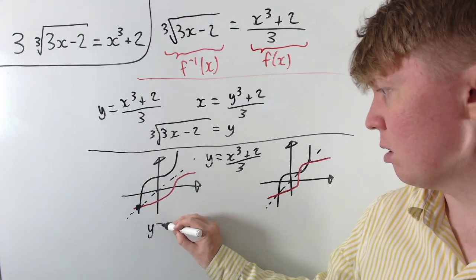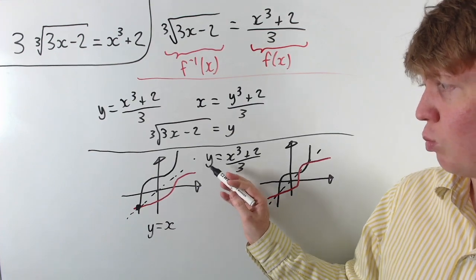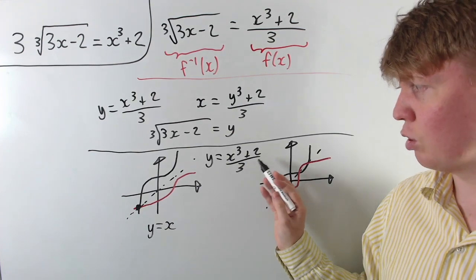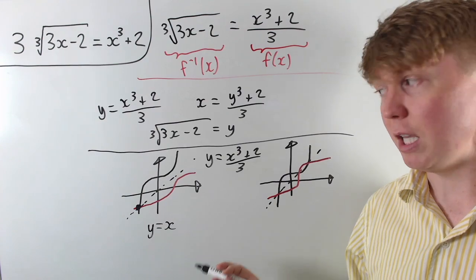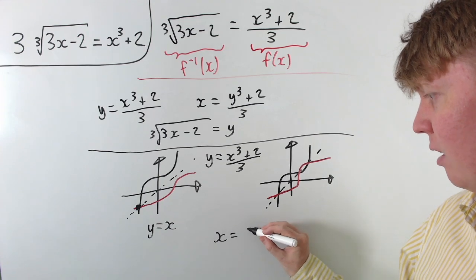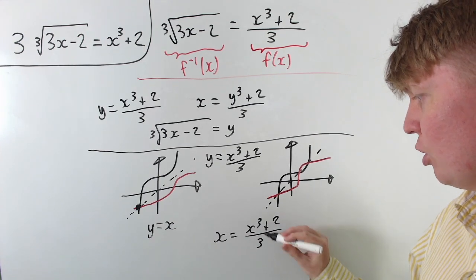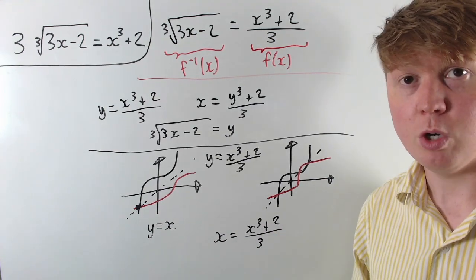So now we need to solve this equation, we've got y equals x, but then we can also think of this as where does our function y equals x cubed plus 2 all over 3, where does this meet the line y equals x? So now our equation just becomes x equals x cubed plus 2 over 3, which is a much nicer cubic equation to work with then.